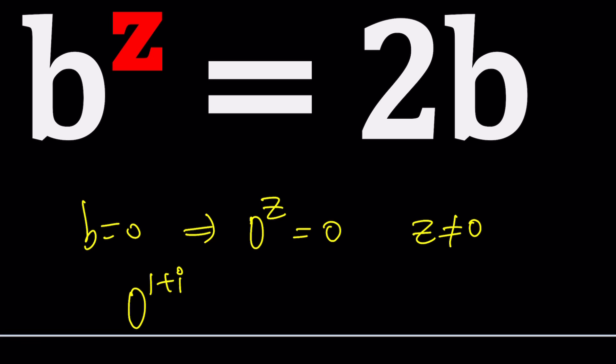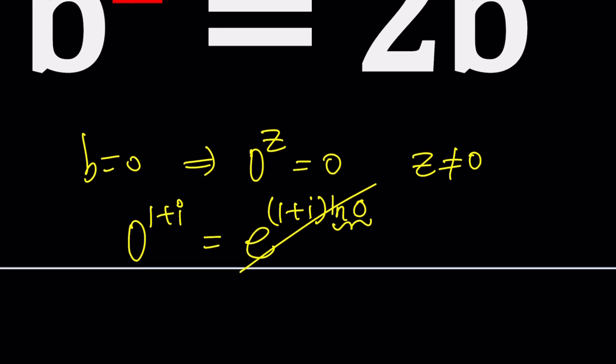Can 0 to the power 1 plus i be 0? That's something to think about. How could we write it? As e to the power (1+i) ln 0. So ln 0 is undefined, so we can't really talk about it. But any power of 0 should be 0. That's a very specific scenario. Let's go ahead and continue with the other cases.